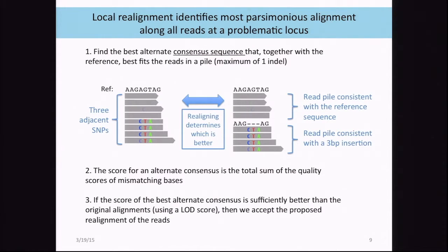The score for an alternative consensus is the total sum of quality scores of mismatched bases. We're looking for an explanation of the data where we have fewer mismatches. If the score of the best alternate consensus is sufficiently better than the original alignment, then we accept the new realignment.